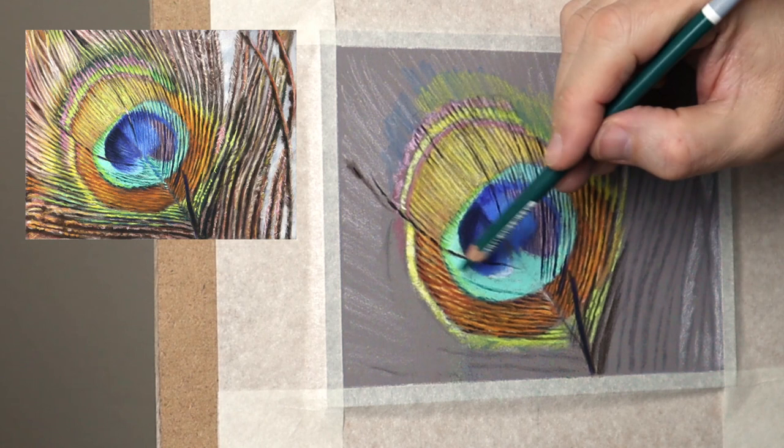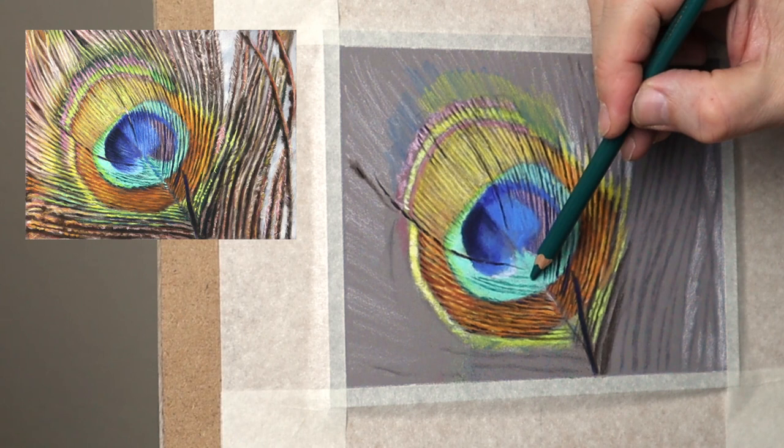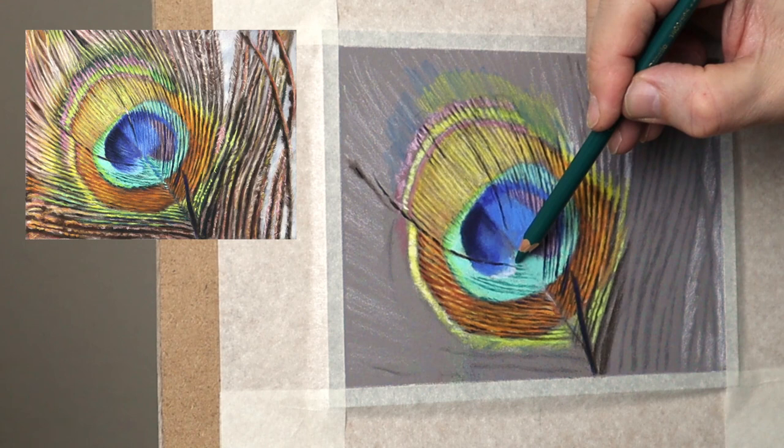Now here I'm using a dark green rather than black just to create that subtlety in between that bluey green color. So you have to change it up, you have to be aware of the subtle changes. It's not all black in between, there's various dark shadows of that color.